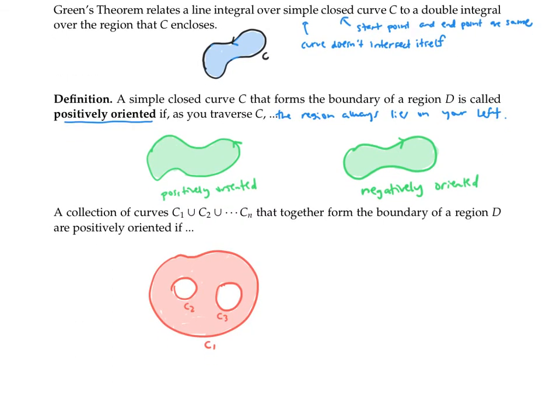In order for these boundary curves to be positively oriented, C1 has to be oriented counterclockwise so the region will be to the left, but C2 and C3 had better be oriented clockwise, so that the region, again, will be to the left as I travel around this curve.